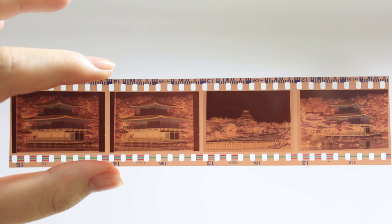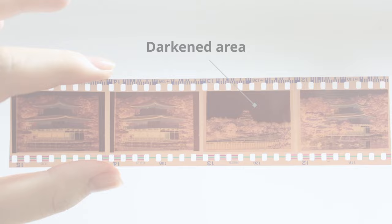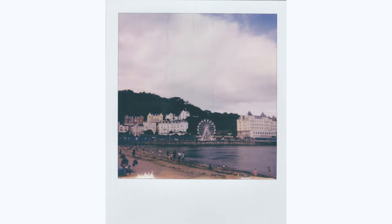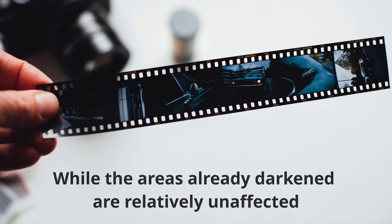This process produces a negative image on the film, with darkened areas corresponding to lighter parts of the scene. To create the final positive image, the negative is flooded with light a second time. The remaining silver halide crystals are reduced into metallic silver, while the areas already darkened remain relatively unaffected.